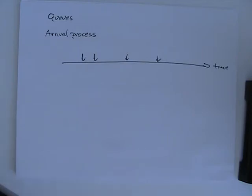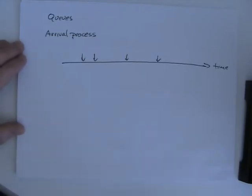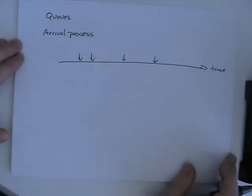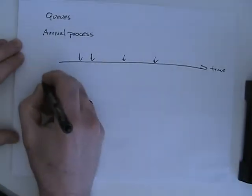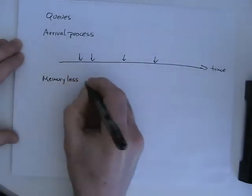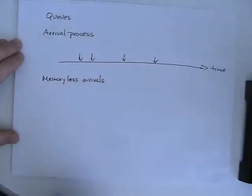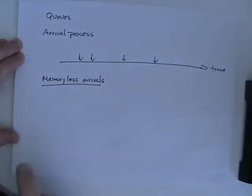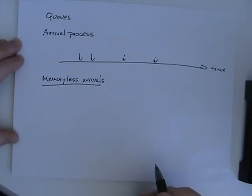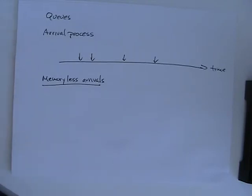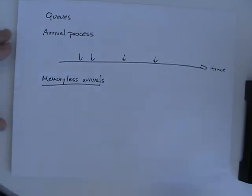In our models, we're going to look at how the system handles these arrivals, so we need a mathematical model for those arrivals. We're going to use the easy model, called memoryless arrivals. Essentially, it means that at any point in time, whether or not an event happens has no correlation with past activity.